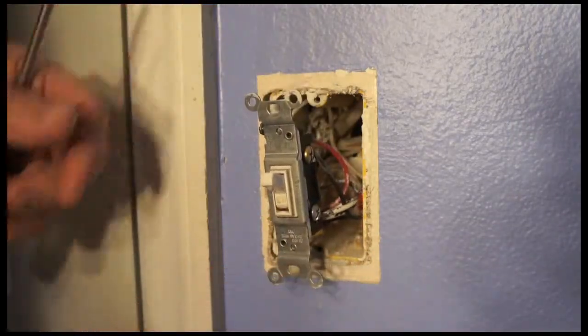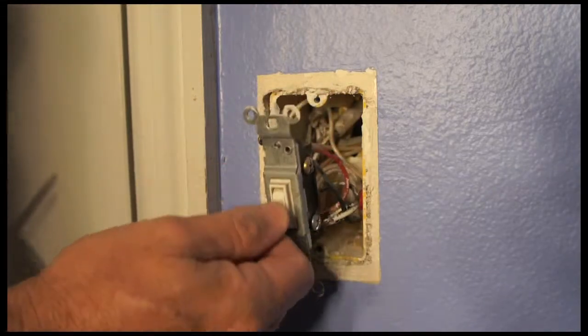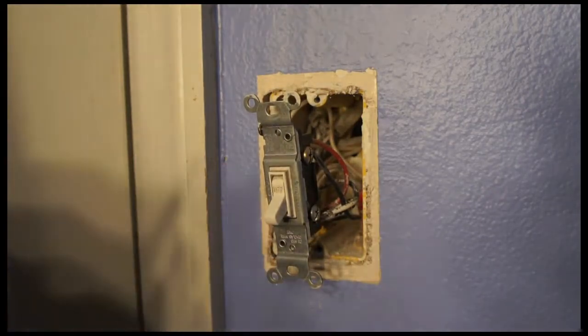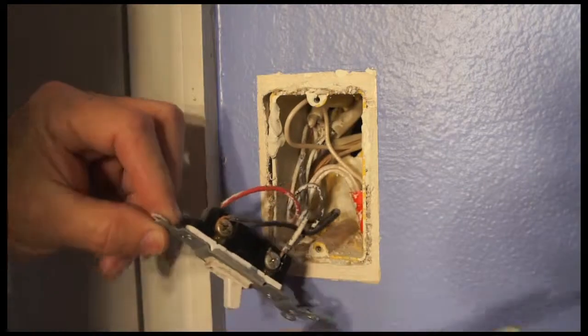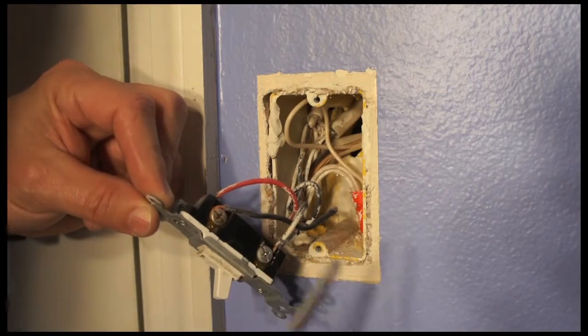The reason why these rocker switches go bad is because of this constant motion of this switch. So now you can see we have the two black wires on here.